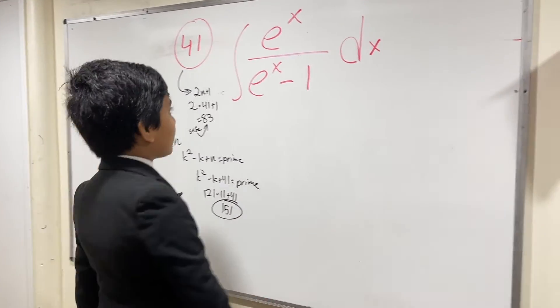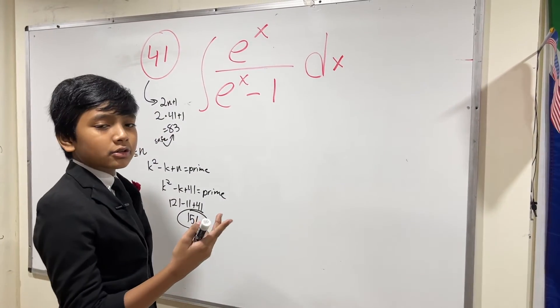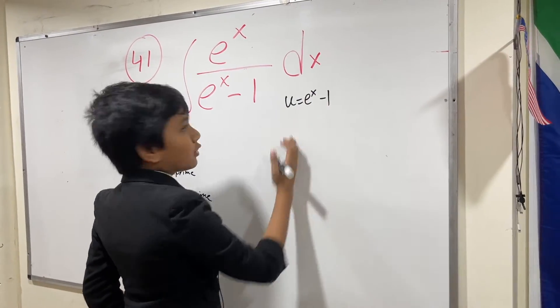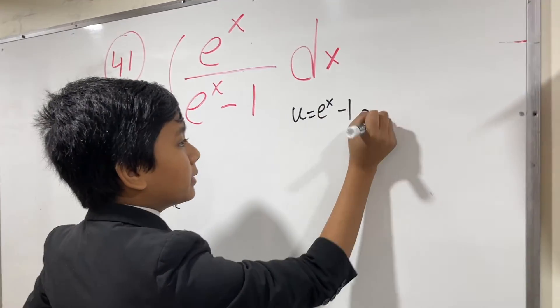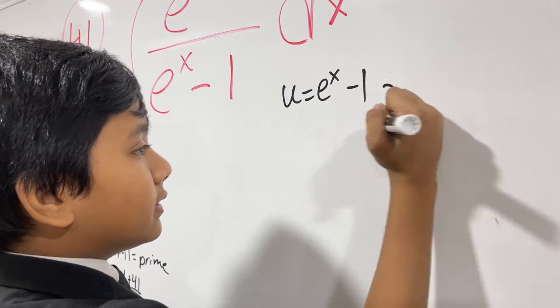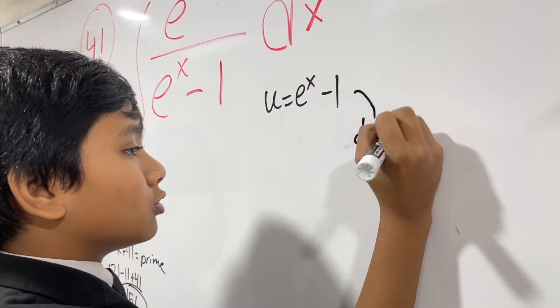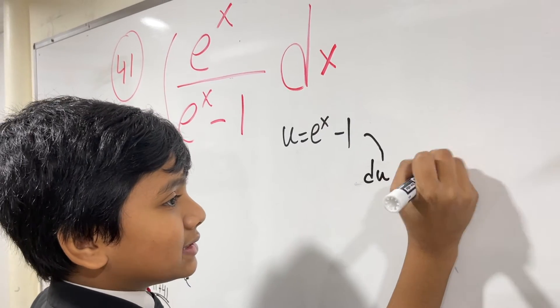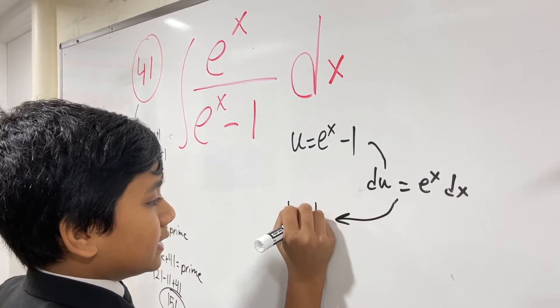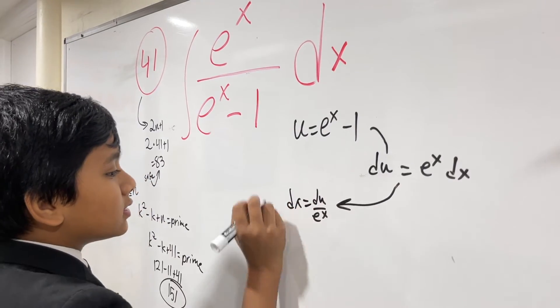All right, so now let's get down to business. This is another u sub, I think it's quite obvious what it is at this point. Let's just do it. u equals e to the x minus 1, du is equal to e to the x dx, thus dx is du over e to the x.